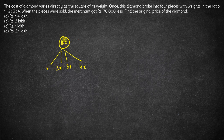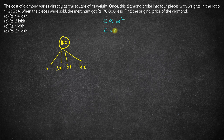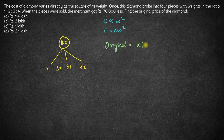This is the original weight of the stone before it breaks into four smaller pieces. It's given that the cost is directly proportional to the square of the weight. That means cost = k × weight². So the original cost of the diamond is k × (10x)² = 100kx².